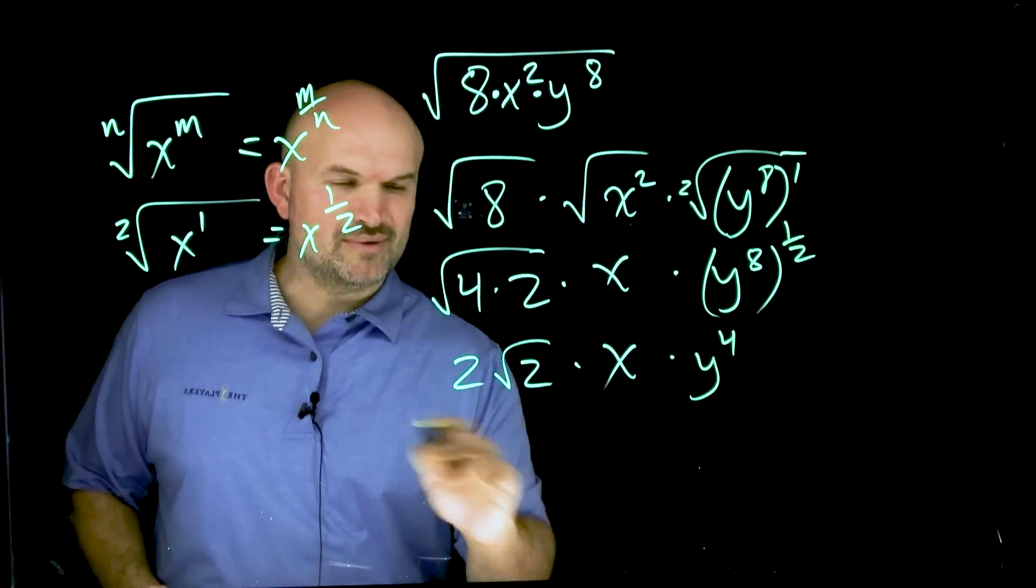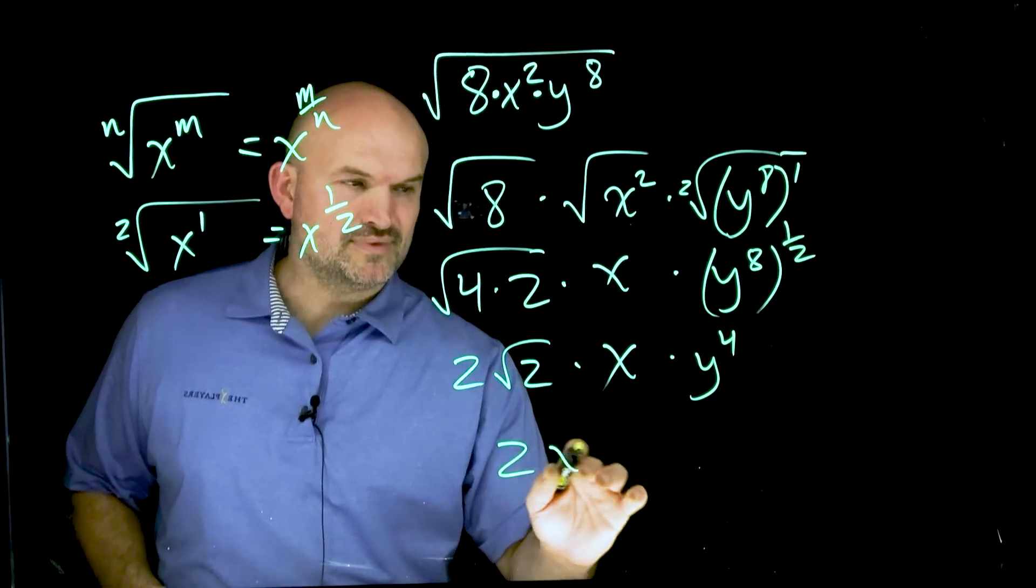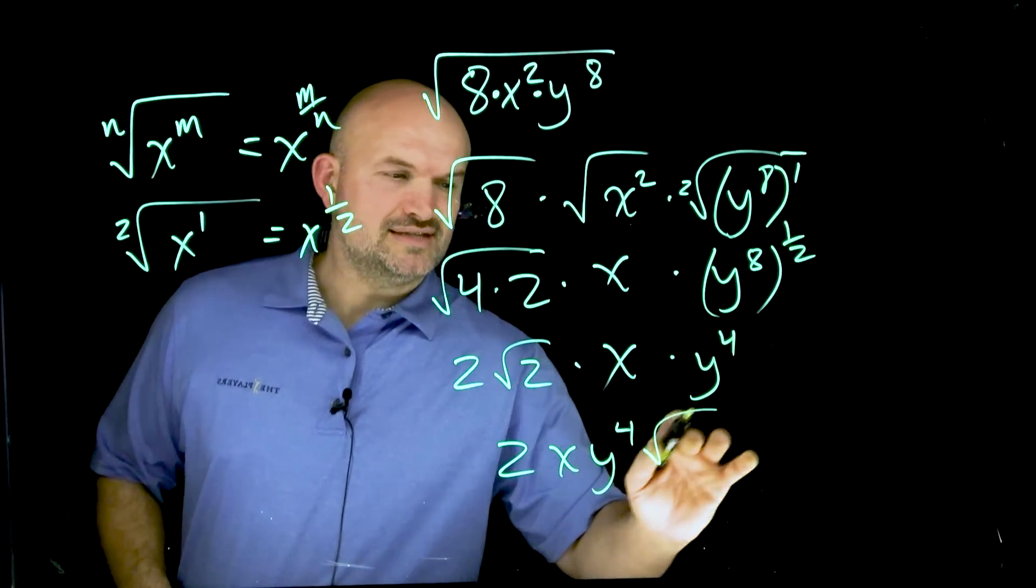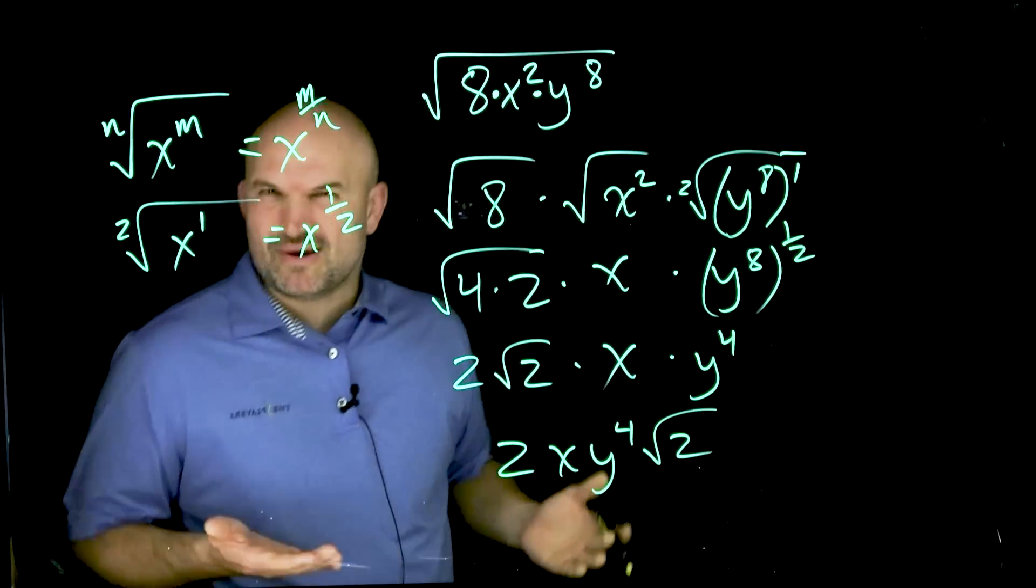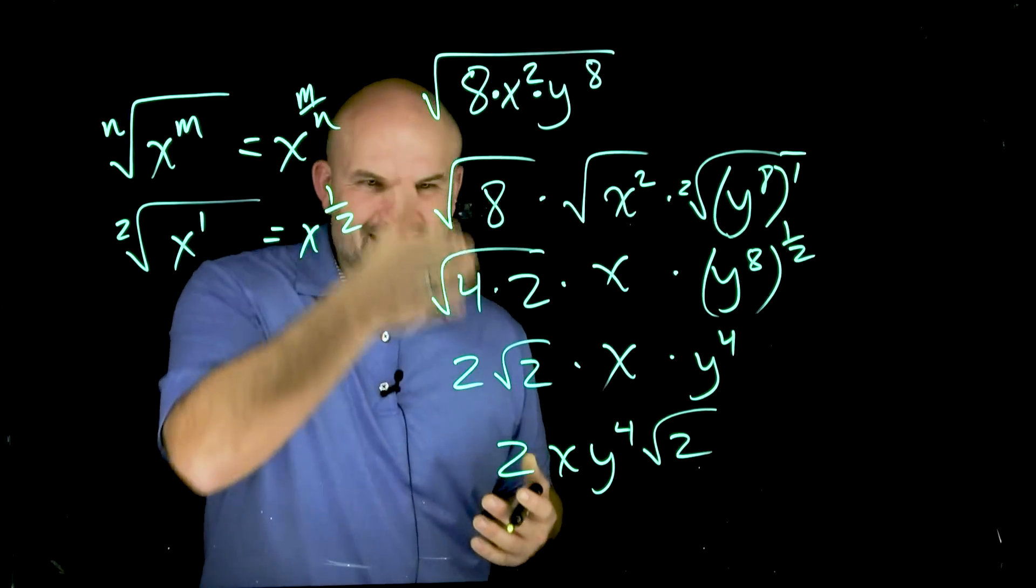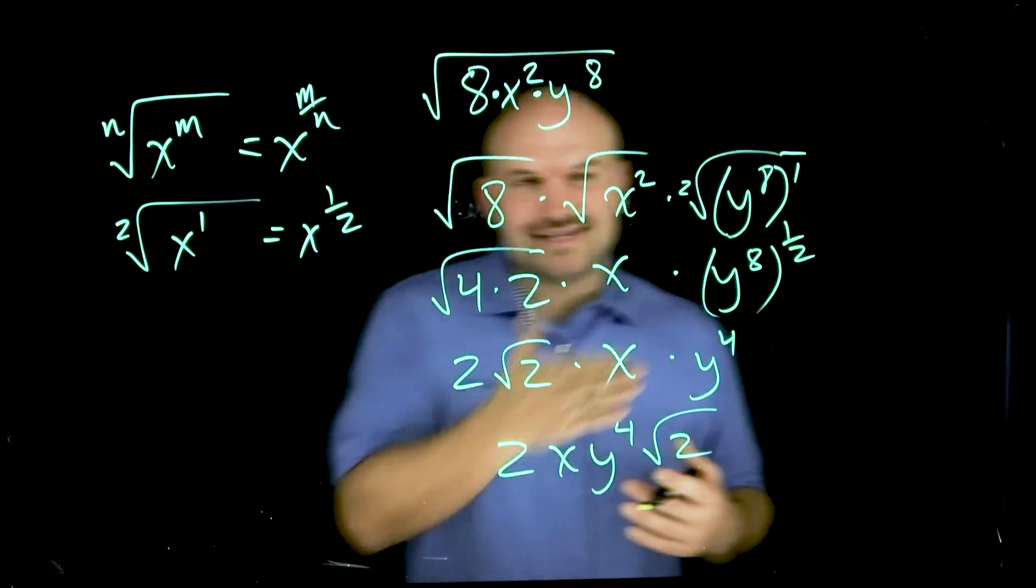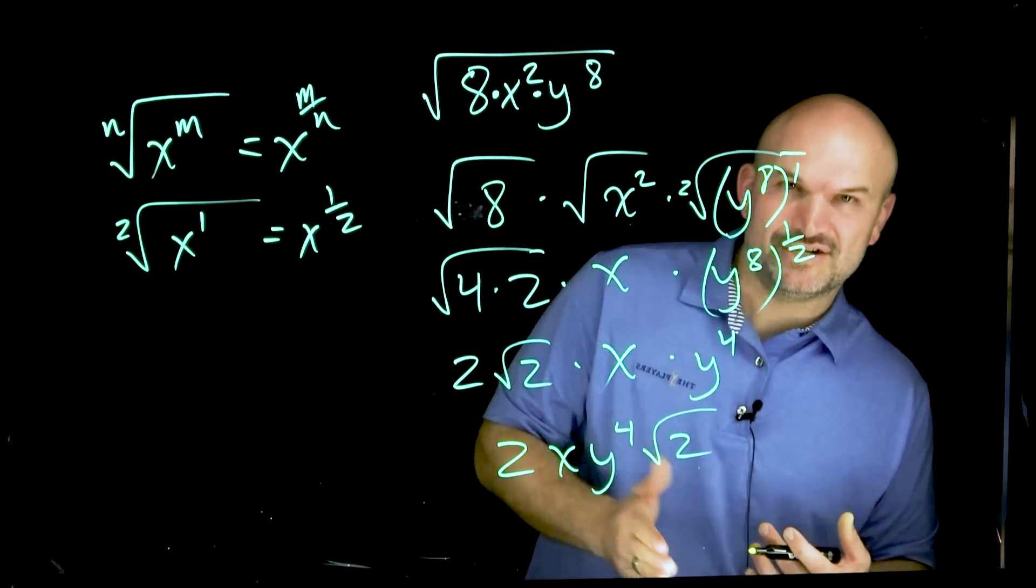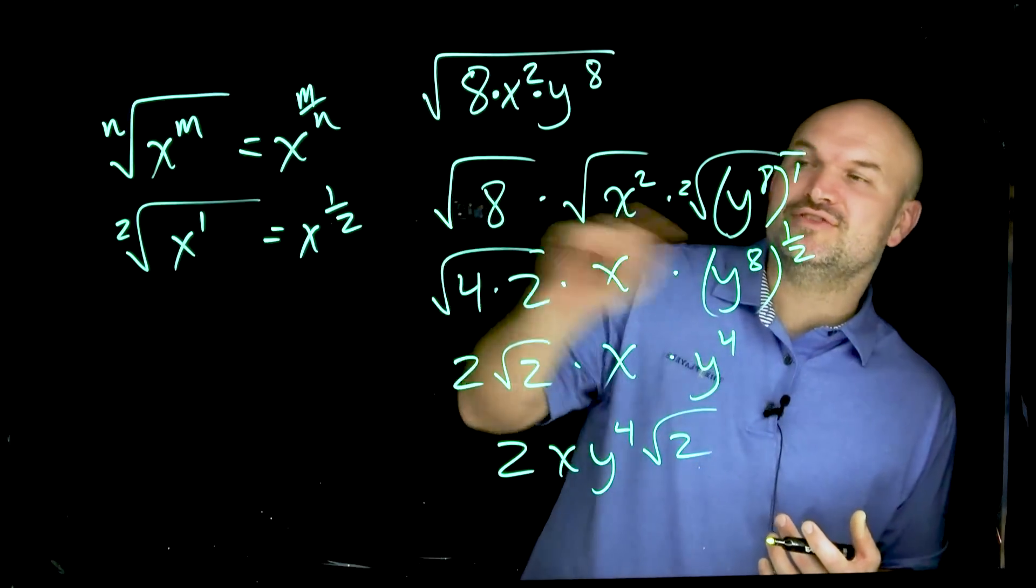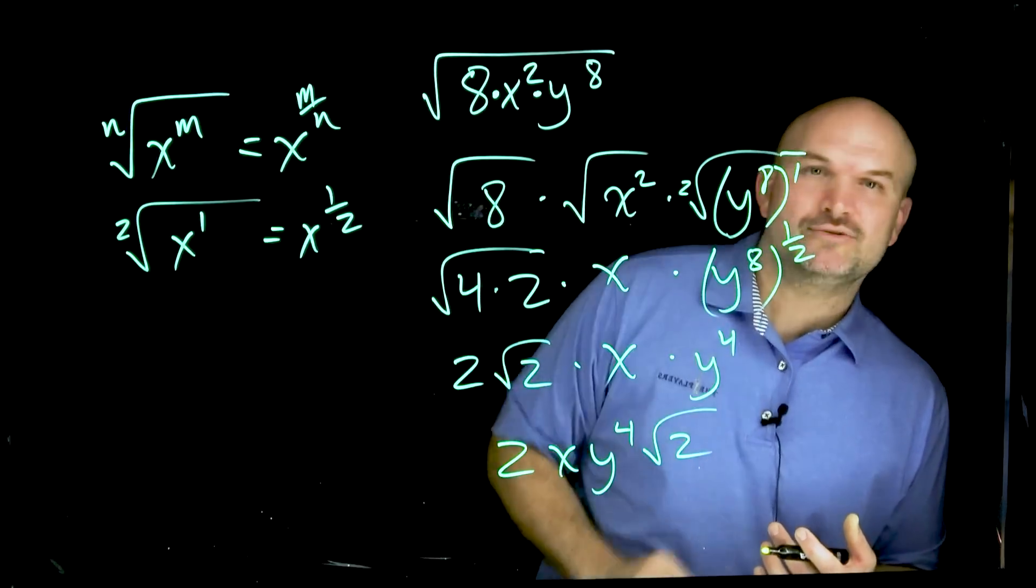Now, if I just wanted to clean this up, I could rewrite this final expression as 2xy to the fourth times the square root of 2. So not always are rational powers going to be helpful. You can see in this case, I didn't want to use rational powers, but a lot of times they can just make our life a lot easier. So don't forget to think about converting your radicals into rational powers.